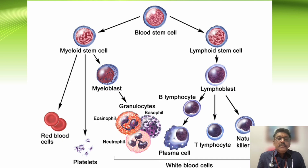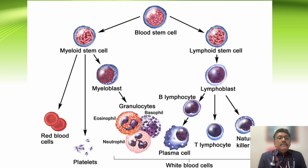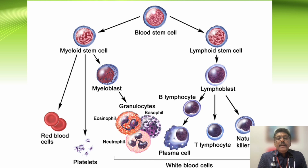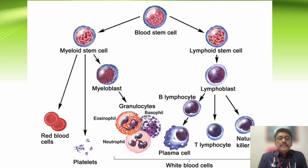Blood is produced in bone marrow from blood stem cells, which form into myeloid stem cells and lymphoid stem cells. From myeloid stem cells, you can get RBCs, platelets, and granulocytes. In granulocytes, we have eosinophils, basophils, and neutrophils.